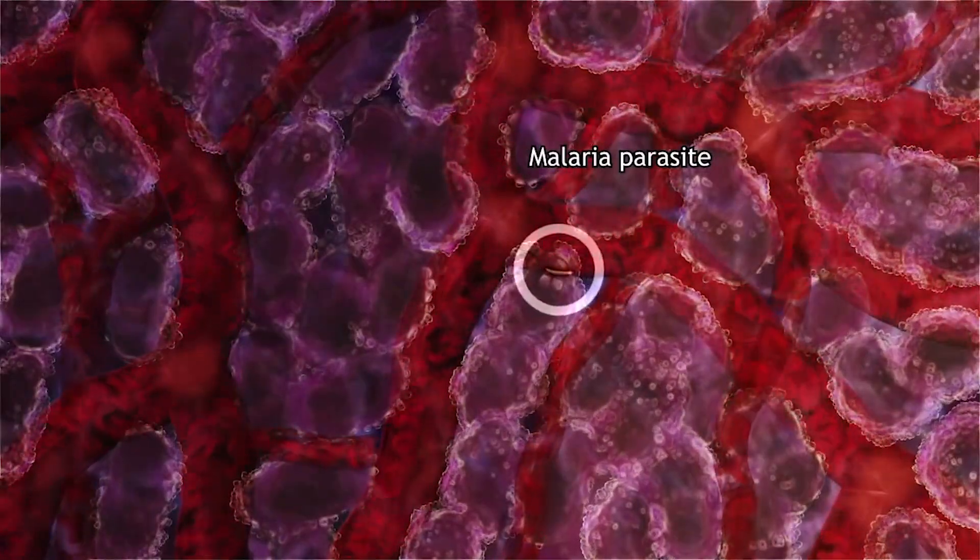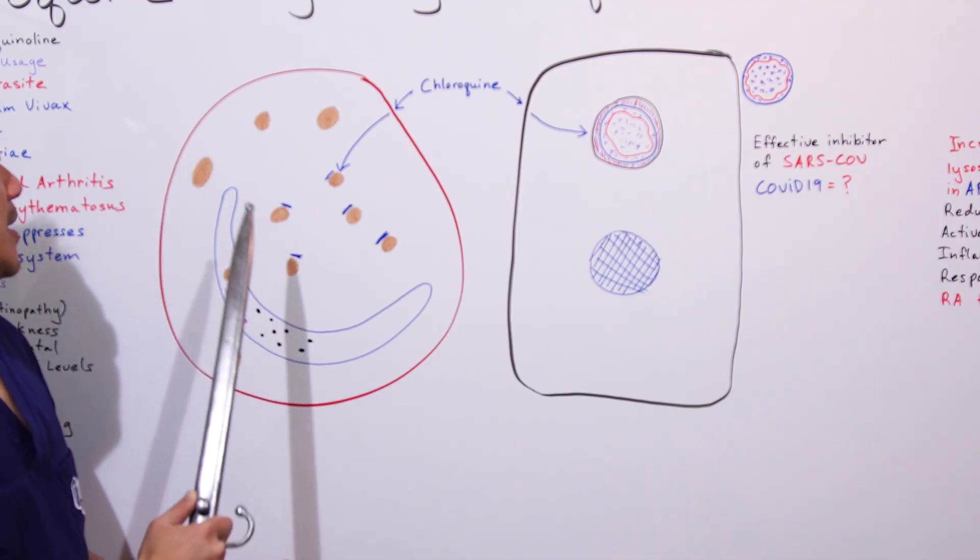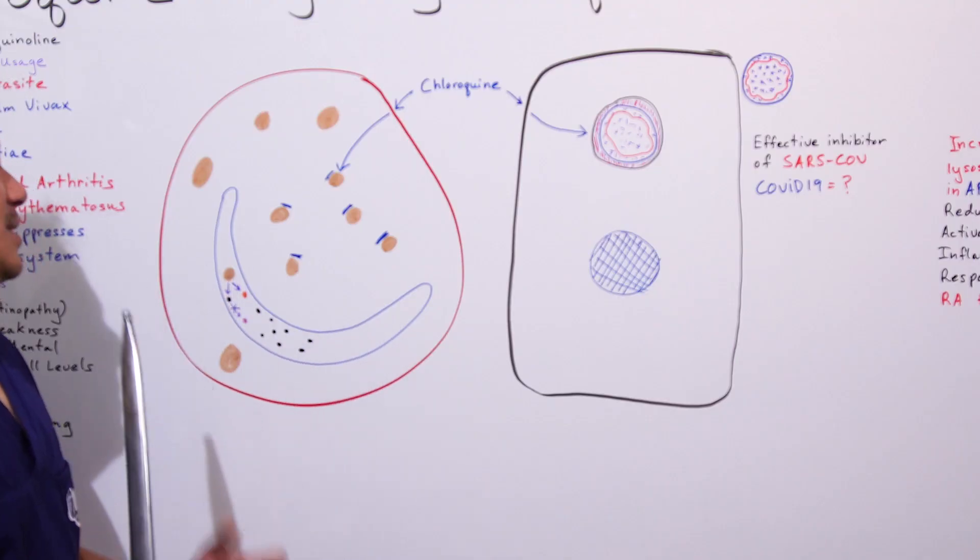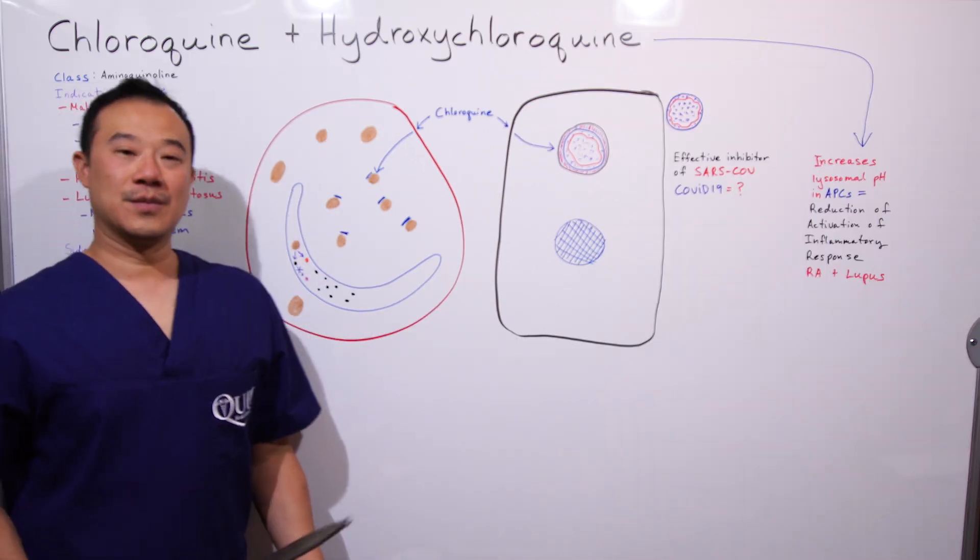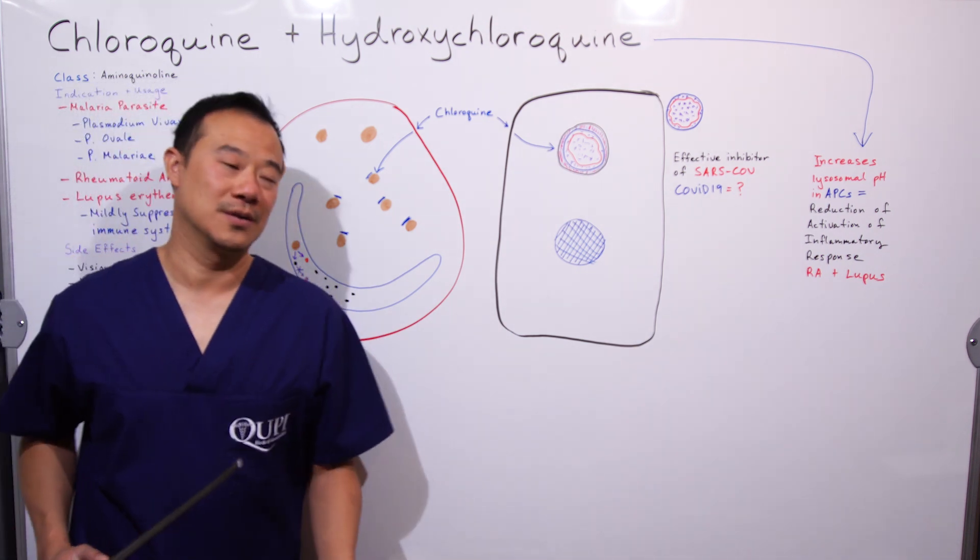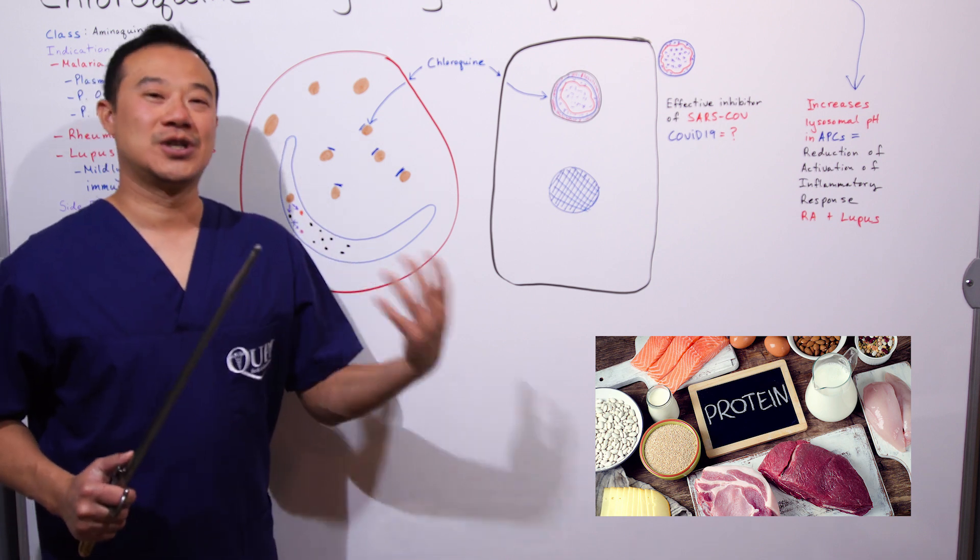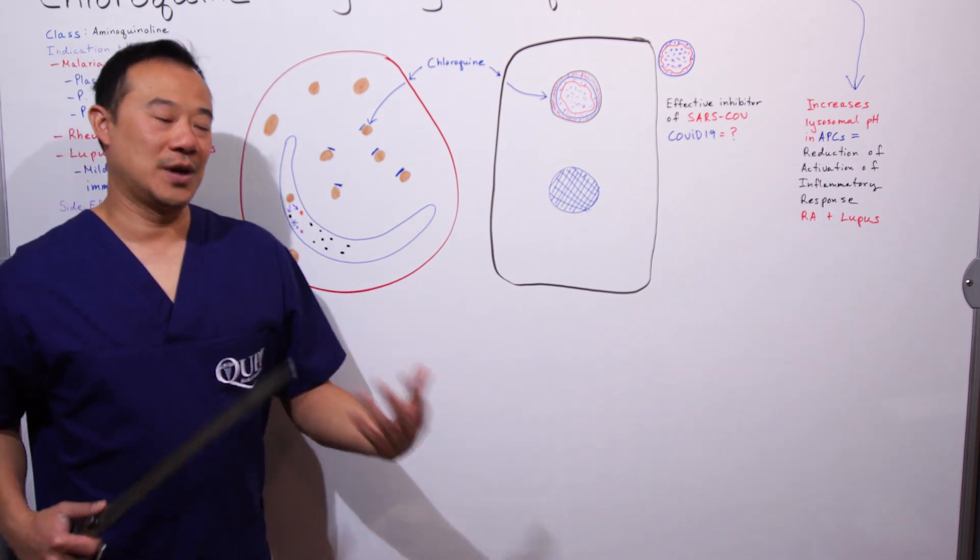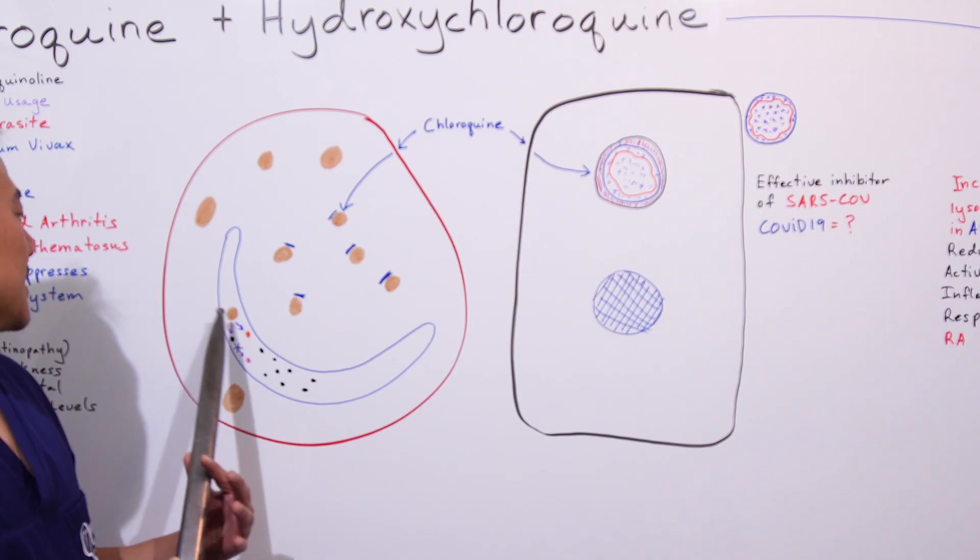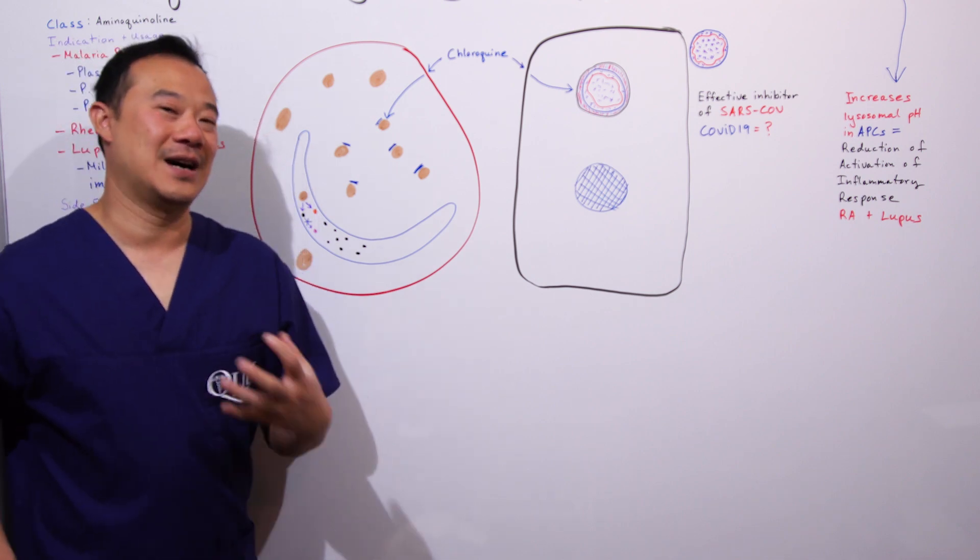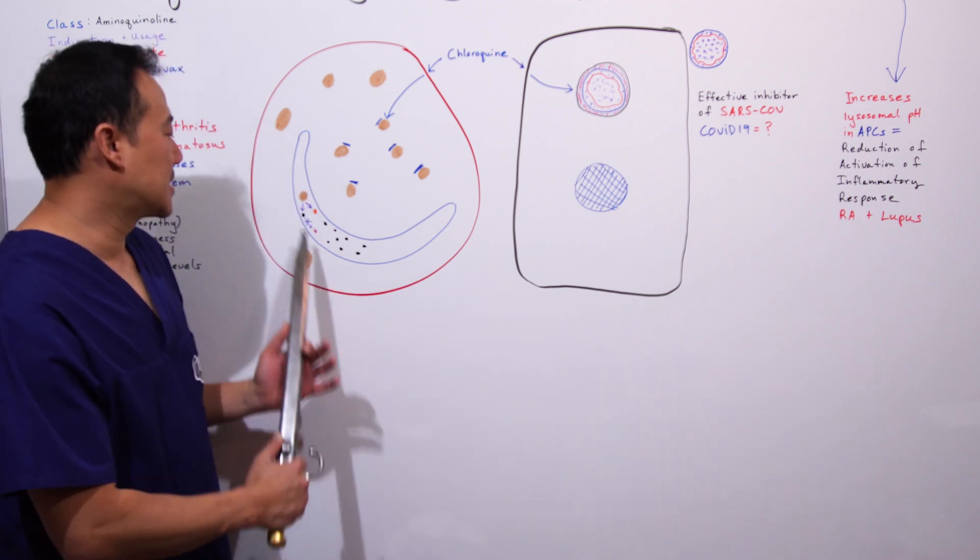These brown spots are hemoglobin. Hemoglobin carries oxygen in red blood cells. The parasite eats hemoglobin as food. Problem with hemoglobin is it's made up of two parts: heme, which is iron in a toxic form, and globin, which is a protein that's digested and turned into energy or whatever it needs to create proteins.